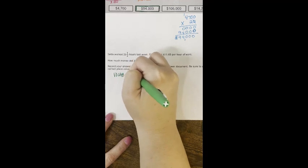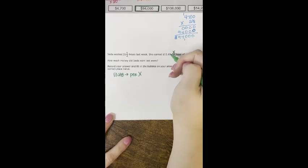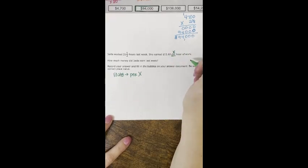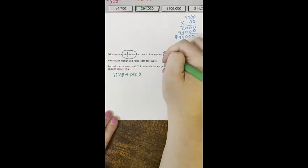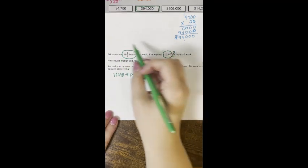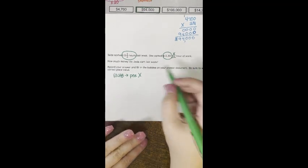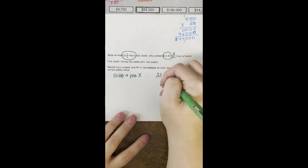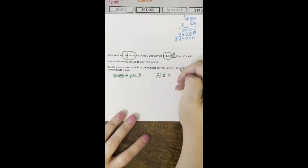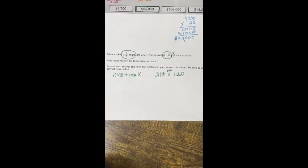We're going to look at vocab. Remember we look at vocab first. Our vocab in this problem was 'per,' and per means to multiply. So literally $11.60 times the number of hours. In this case we had 21 and a half hours.